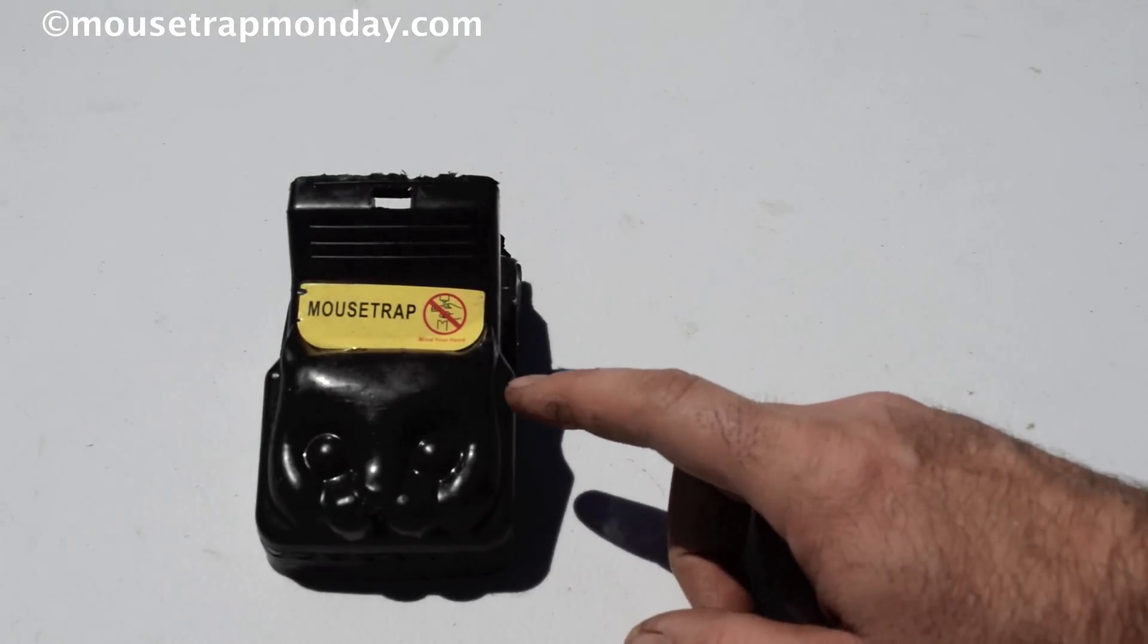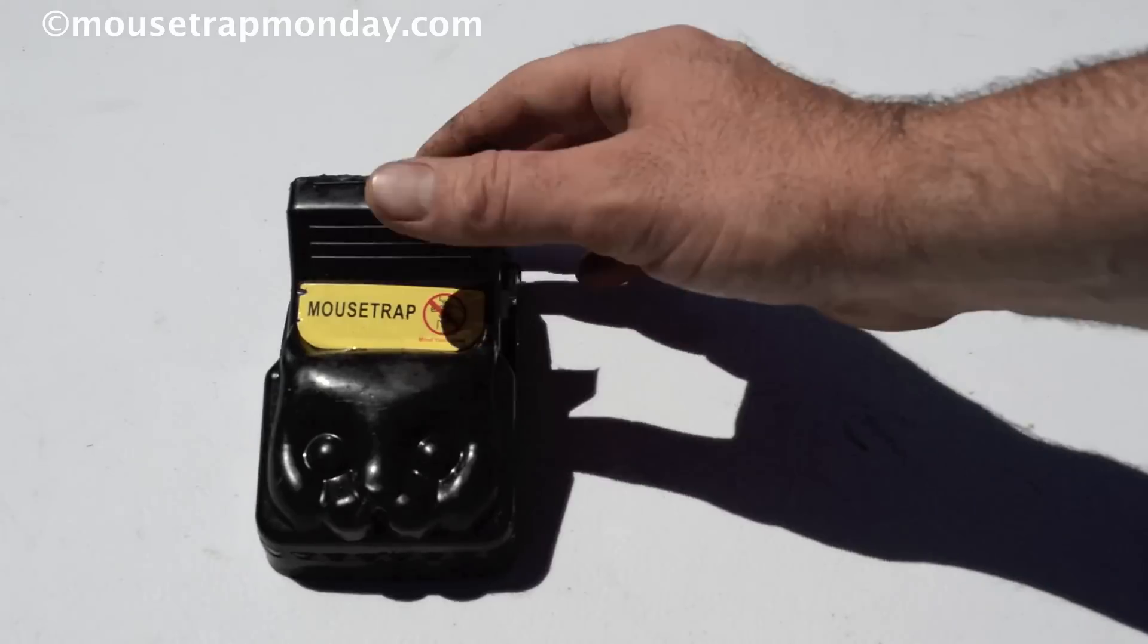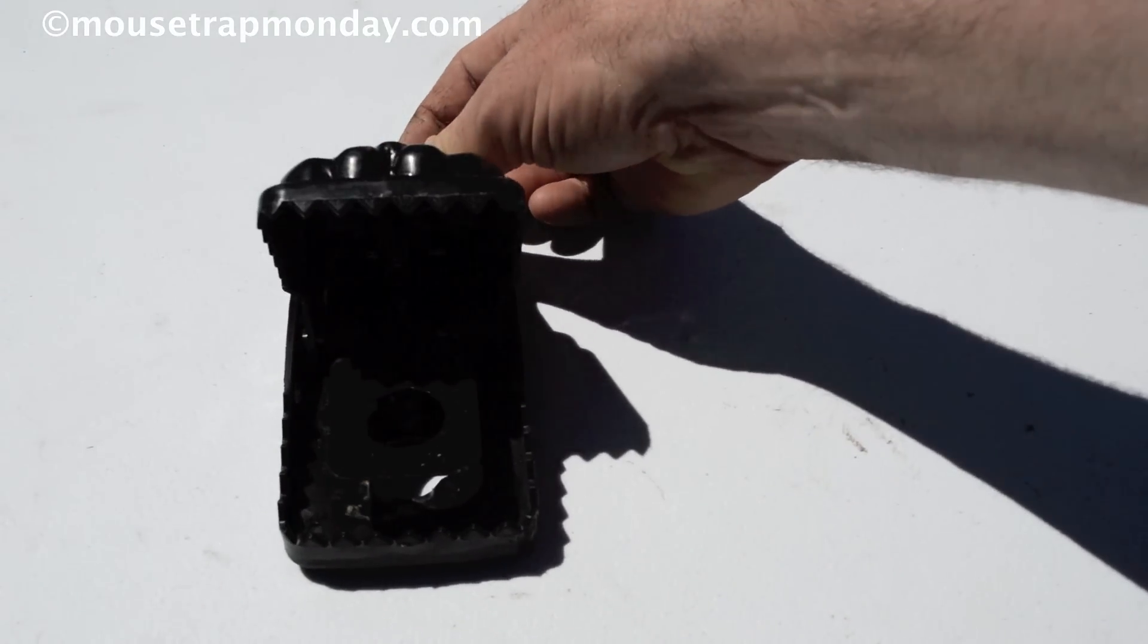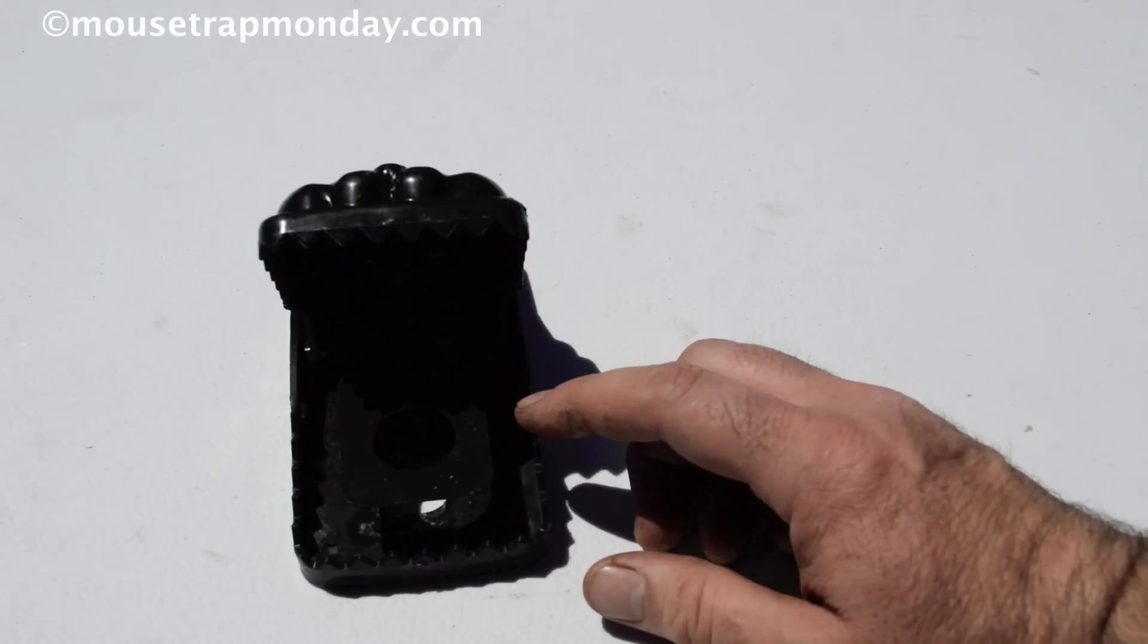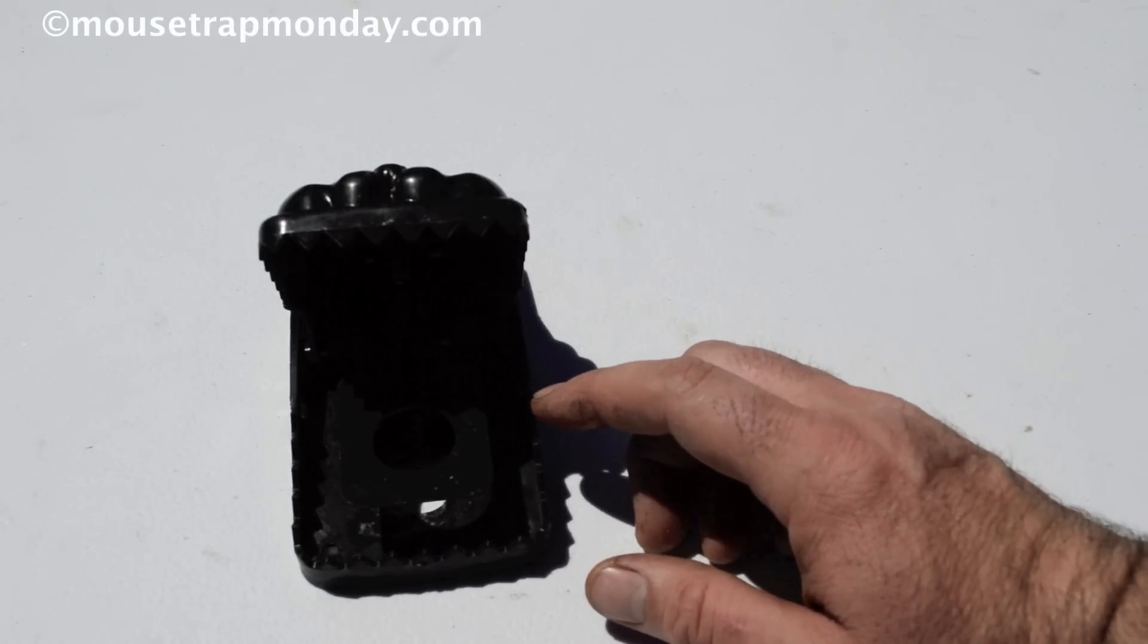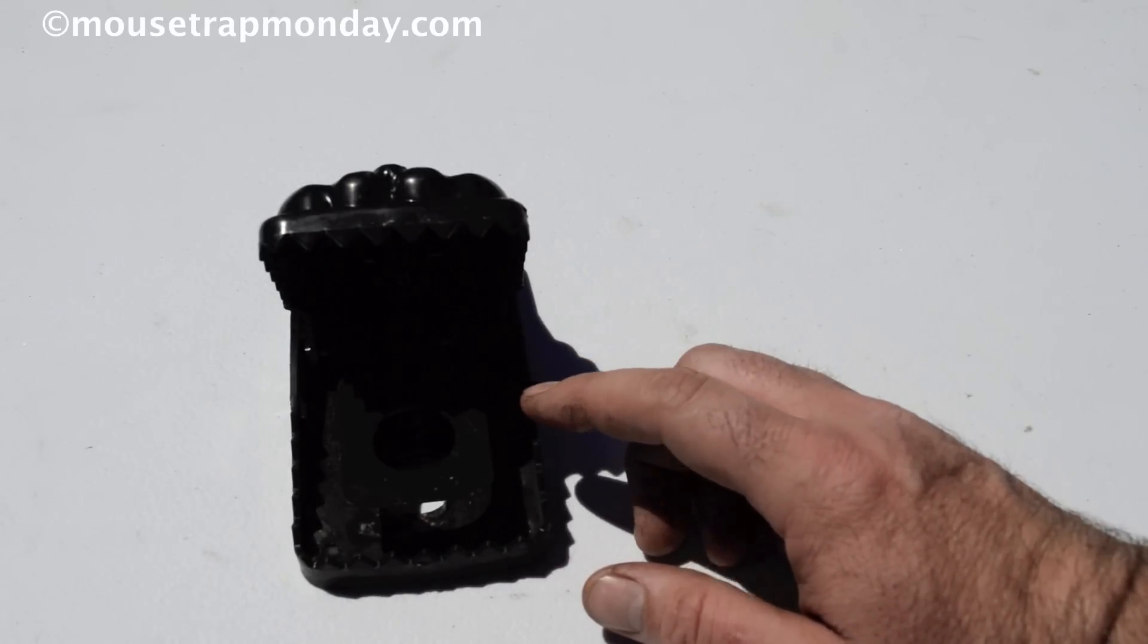Well, I've tested this Black Cat snap trap out quite a bit and the conclusion is that if a mouse does set this off, it takes quite a bit of time for it to trigger, that mouse is dead. Those springs are powerful enough to completely kill that mouse.